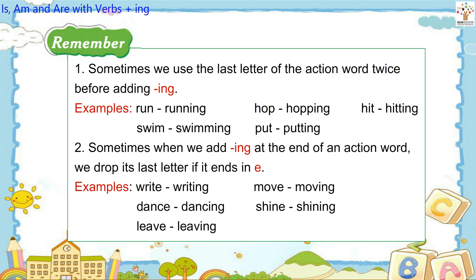Sometimes when we add -ing at the end of an action word, we drop its last letter if it ends in 'e'. Examples: Write — writing, Move — moving, Dance — dancing, Shine — shining, Leave — leaving.